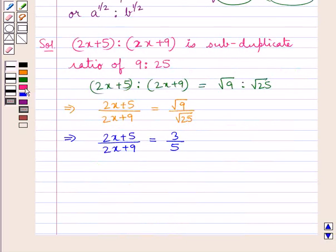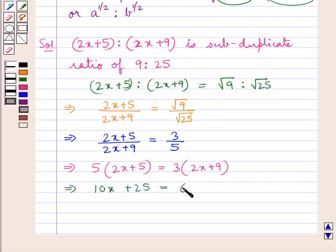Now, cross-multiplying we get 5(2x + 5) = 3(2x + 9). This gives us 10x + 25 = 6x + 27.